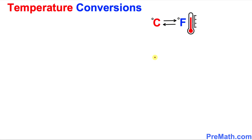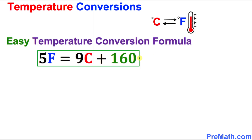Welcome to pre-math. In this video tutorial I am going to show you a simple and easy formula to convert degrees Celsius to Fahrenheit and vice versa. Here is the formula that you will be using for conversion — this is called 5F equals 9C plus 160, where F stands for Fahrenheit and C stands for Celsius.